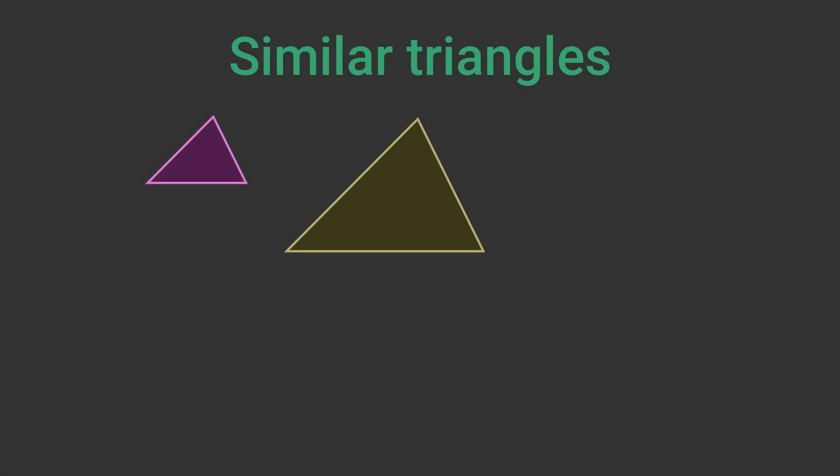Similar triangles are triangles that are the same shape but not necessarily the same size. There are two tests for similar triangles. If two triangles have two angles that are the same they are similar. This is called the AA rule.